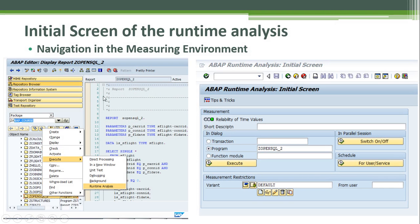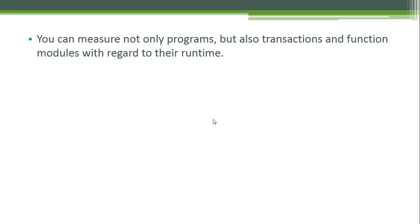To display the initial screen of the runtime analysis, navigate to a program, right-click, select the Execute function, and then select Runtime Analysis. In the initial screen, you can analyze the performance of a transaction, a program, or a function module by specifying the name in the input field and clicking Execute. Another way to start the runtime analysis is by executing transaction SE30. From the menu path field, you can measure programs, transactions, and function modules.